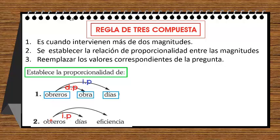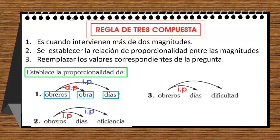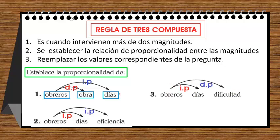Obreros con días ya dijimos que es inversamente proporcional. Obreros con eficiencia viene a ser inversamente proporcional. Obreros con dificultad viene a ser inversamente proporcional.